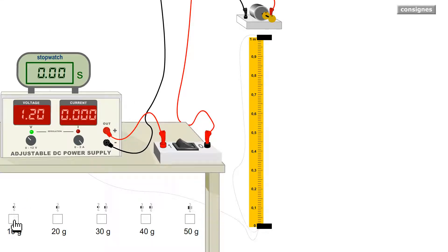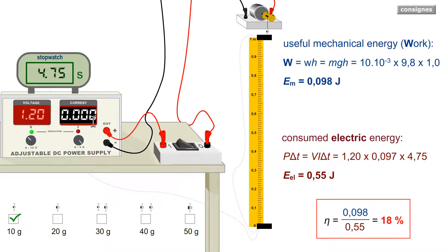I ask the motor to raise a mass of 10 grams. I read 97 mA here and the stopwatch tells me that this work lasted 4.75 seconds. Here is I, the current. Here is delta T, the duration of this conversion.